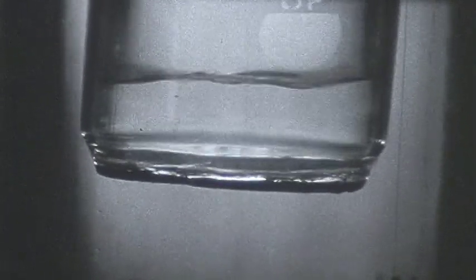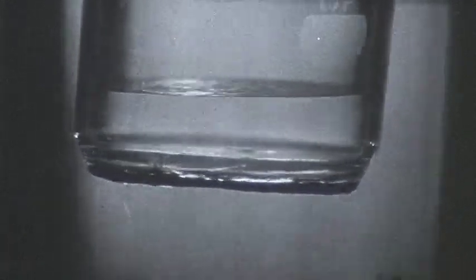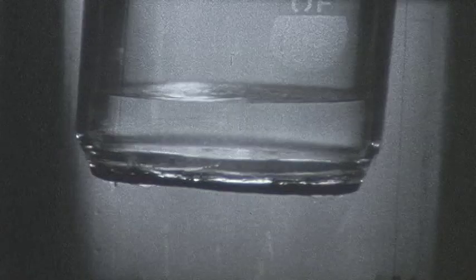Here you see the lambda point transition. The helium two all pours out. The rate of pouring would not be noticeably slower if the porosity were made yet finer.